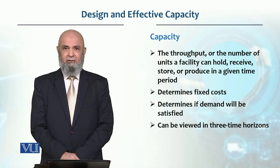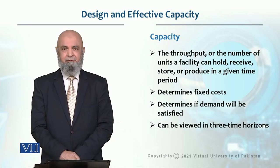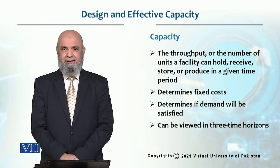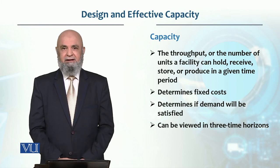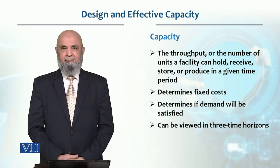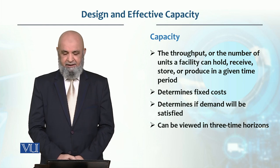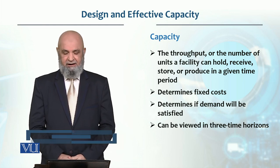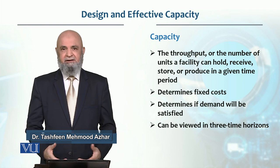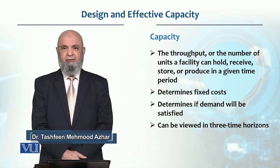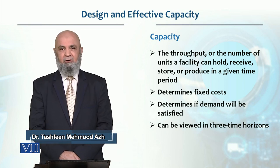If we look at capacity, we can define capacity as throughput — that is basically a number of units that pass through a system in a given time. It can also be a number of units a facility can hold, which is basically the capacity of a warehouse or a store.